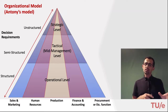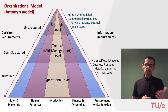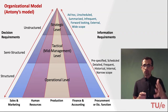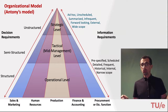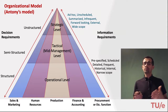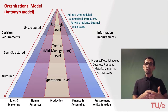Looking at the information needed by information systems to support decisions at these levels, there are critical differences. At lower levels, information needs are pre-specified, scheduled, detailed, frequently needed, narrow in scope, and typically rely on historical data. At higher levels, the information needed is typically ad hoc, unstructured, summarized rather than detailed, forward-looking, and has wide scope. At strategic levels, information about the external environment is also needed — for instance, competitor data, market conditions, customer profiles, and customer needs.